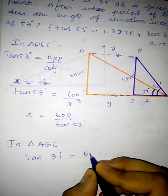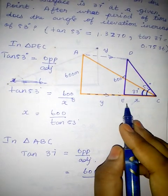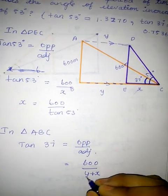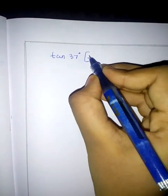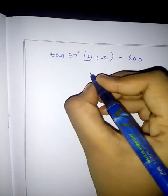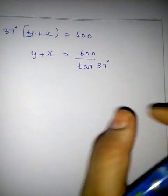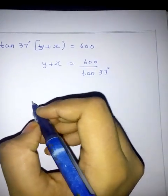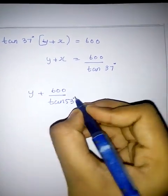For tan 37 degrees: tan 37 = opposite over adjacent, where opposite is 600 and adjacent is y. So y plus x is equal to 600 divided by tan 37 degrees.